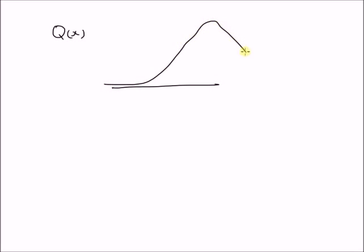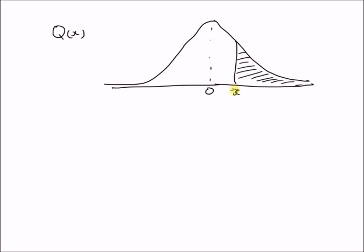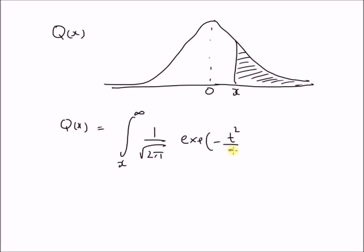Hello, welcome. In this short video, let us look at the approximate expression for the function Q(x). The function Q(x) basically represents a partial area under the normal distribution curve with mean 0 and variance 1. When you have a normal distribution with mean equal to 0 and variance equal to 1, the function Q(x) is the area represented by the shaded region, where this is the point x. So, Q(x) is defined as the integral from x to infinity of (1/√(2π)) × exp(−t²/2) dt, since this is the normal PDF with mean 0 and variance 1.